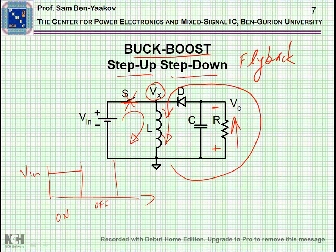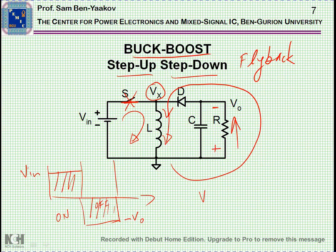During the off time, we're going to see V out — actually minus V out. Now, for the average voltage to be zero, this area must be equal to this area. So V in times T on must be equal to minus V out times T off.